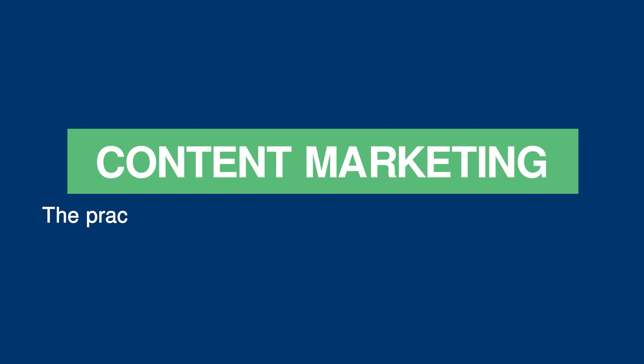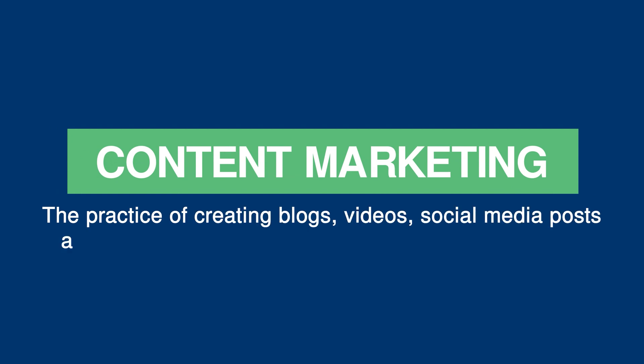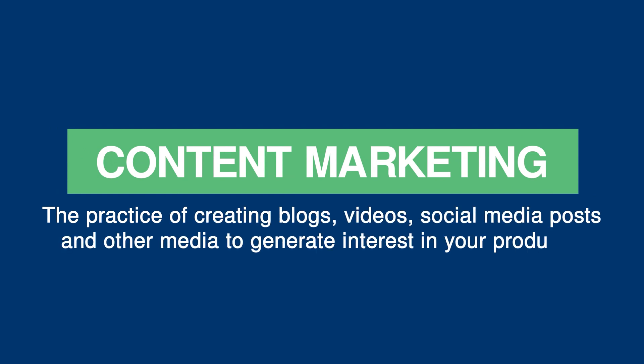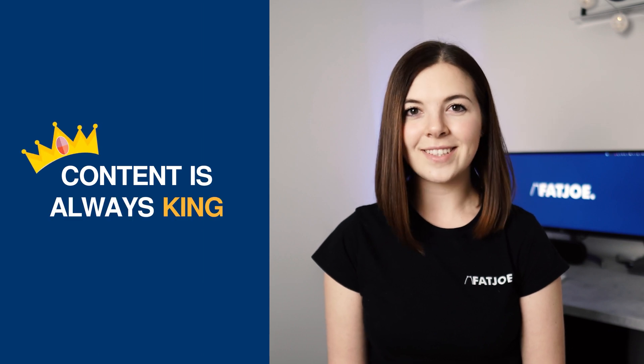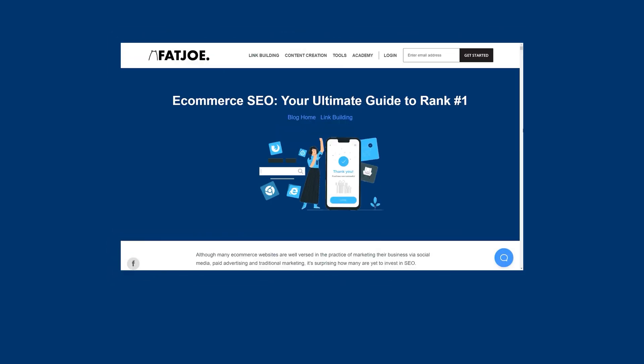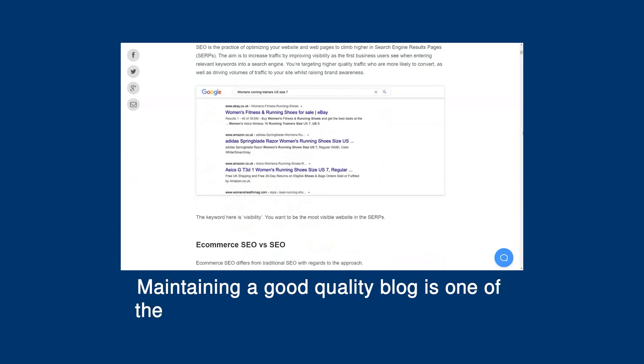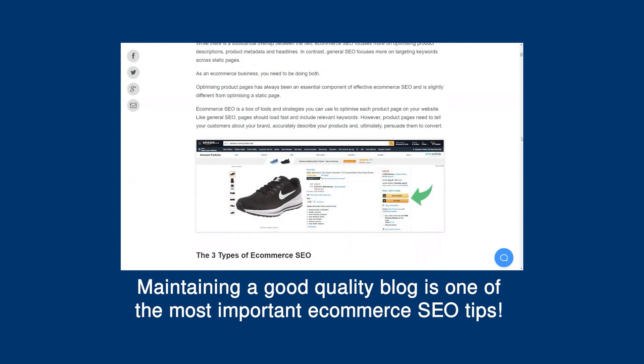Now let's talk about content marketing. Content marketing is the practice of creating blogs, videos, social posts and other media to generate interest in your products. No matter which of the three types of e-commerce SEO you choose to do, content is always king. When you produce quality product-related content, users have more of a reason to visit your site and it gives external websites an incentive to link back to you. Maintaining a good quality blog is one of the most important e-commerce SEO tips.